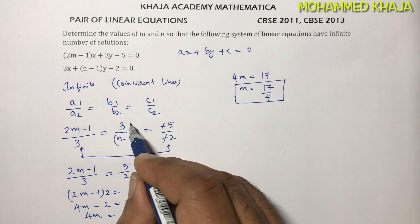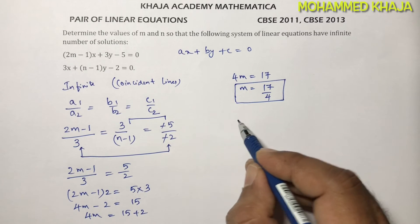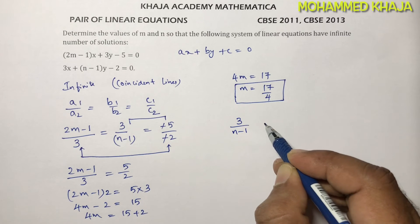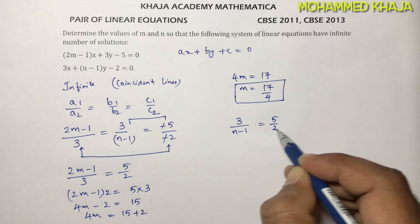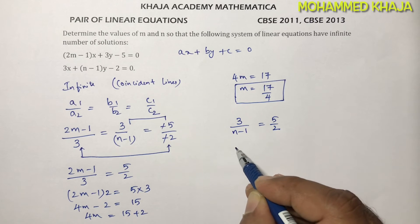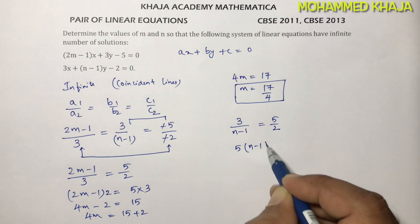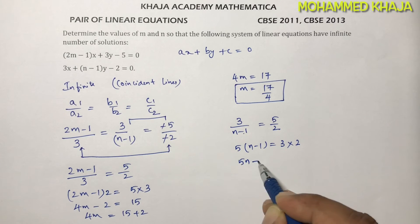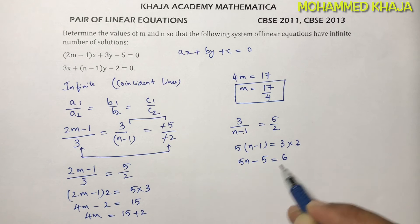Now equate the second with the last one, the constants. So 3 by n minus 1 equals 5 by 2. Cross multiply again. 5 times n minus 1 equals 3 times 2. 5 times n minus 5 times 1 gives 5n minus 5. 3 times 2 is 6.